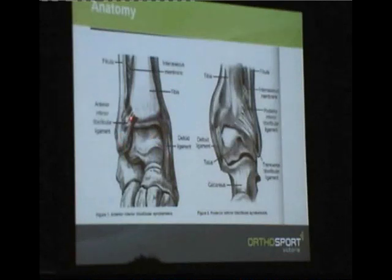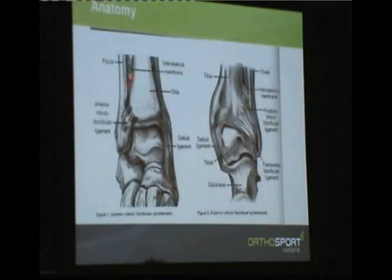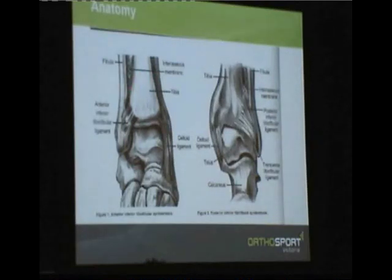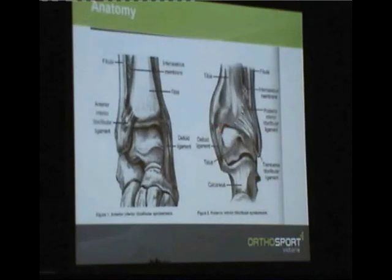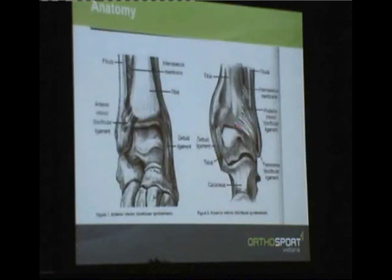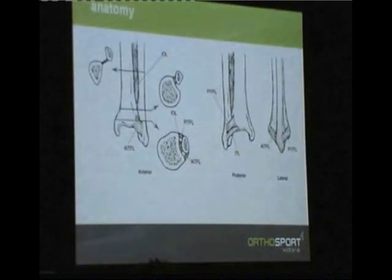We're looking at the anterior syndesmotic ligament here. This is quite an important component, along with the interosseous membrane with a bit of ligamentous component, and then the posterior ligament — the tibiofibular ligament — which is crucial to the stability. The diagram isn't quite accurate; it's a bit more of a transverse band.